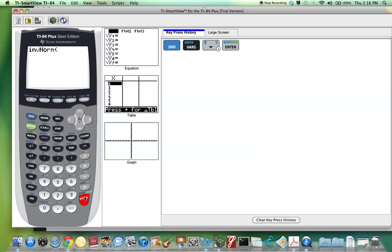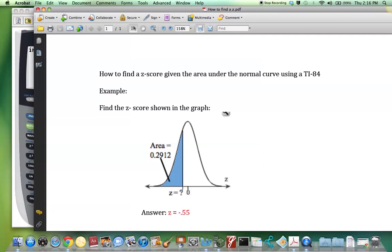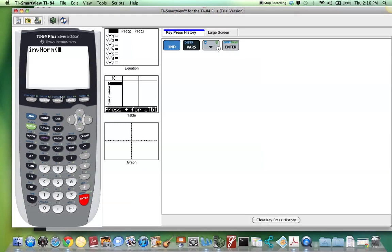Now, we'll type in the area that was to the left of z. The area that was to the left of z was 0.2912. So we will type in 0.2912. Again, that was the area to the left of z that we're trying to find.